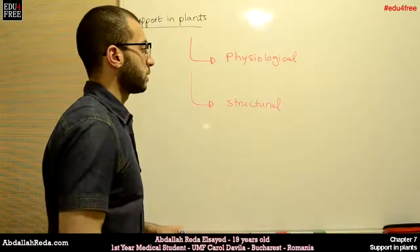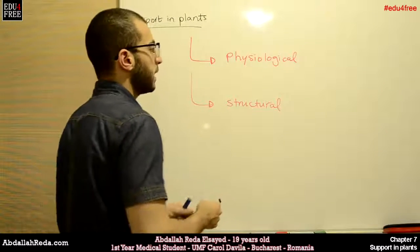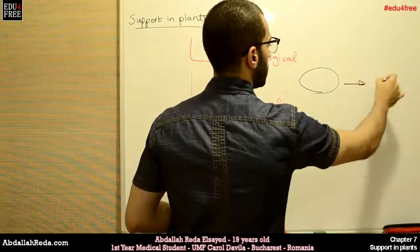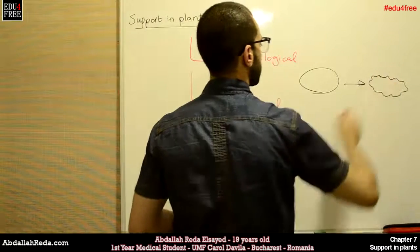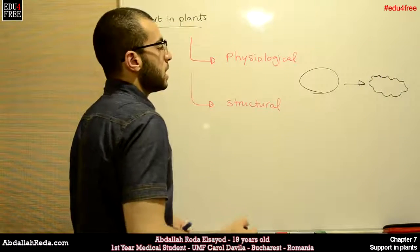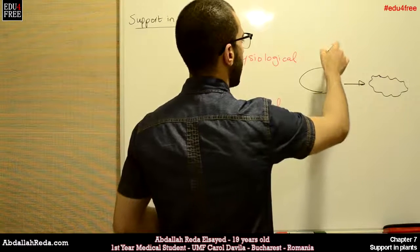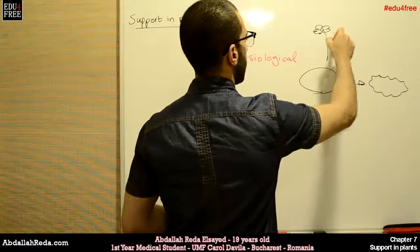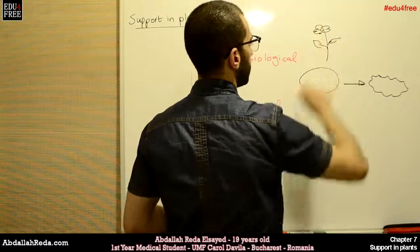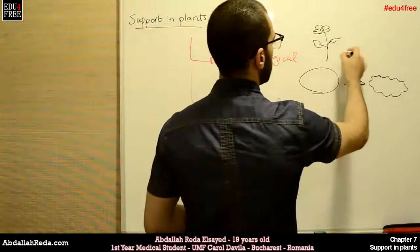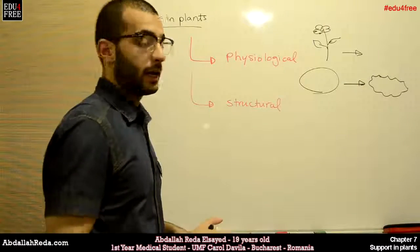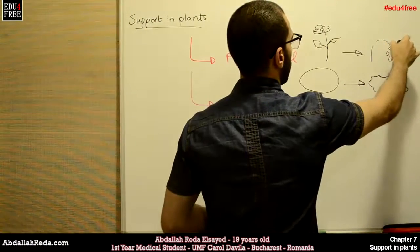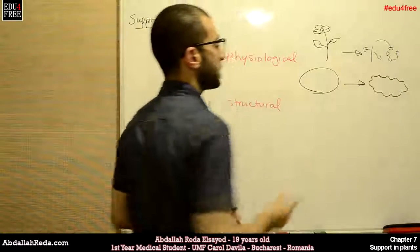Let's begin with the physiological support. Let's say you leave a seed in open air — after a while, the seed will become wrinkled. Or, if you leave a plant in a field and the field is not irrigated for a long time, the plant will wilt. Why does this happen?